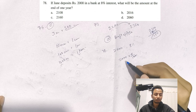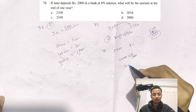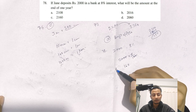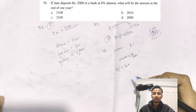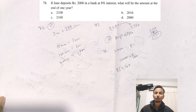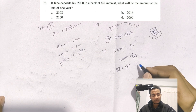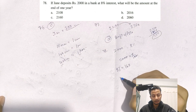The interest at 8% on Rs. 2000 is calculated. 8% of 2000 is 160. So the amount at the end of one year would be Rs. 2160.